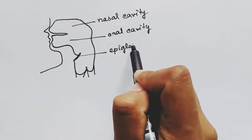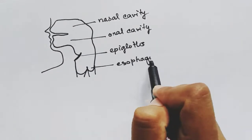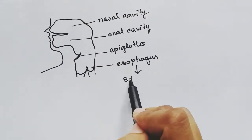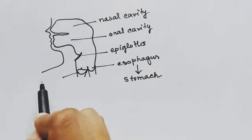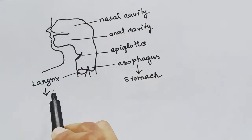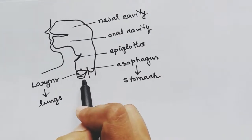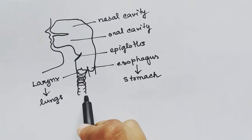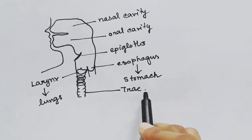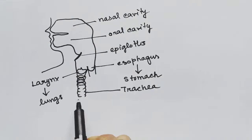This is the epiglottis which covers the trachea while we are eating, the esophagus which is going towards the stomach, and this is the larynx which is going towards the lung. These are the cartilage rings which form the trachea. The trachea will divide inside the lung.